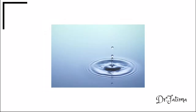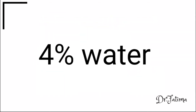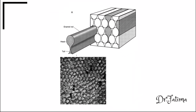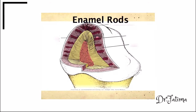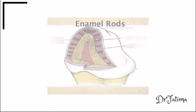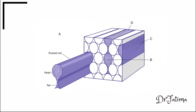Approximately 1% to 2% of enamel is made up of organic material, particularly enamel-specific proteins called enamelins, which have a high affinity for binding hydroxyapatite crystals. Water makes up the remainder of enamel, accounting for about 4% of its composition. The organic and water components of enamel are highly organized.